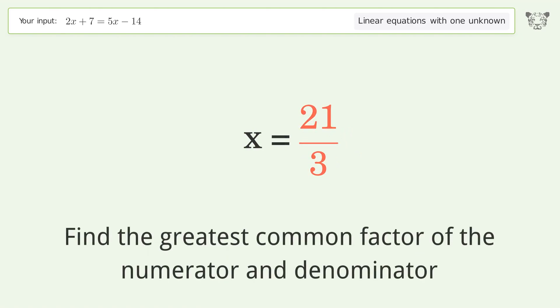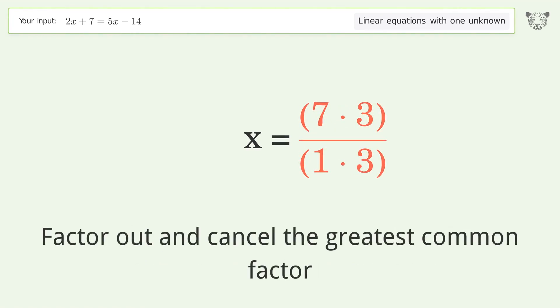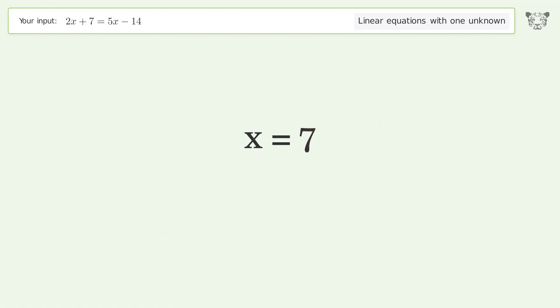Find the greatest common factor of the numerator and denominator. Factor out and cancel the greatest common factor. And so the final result is x equals 7.